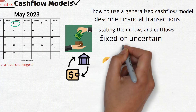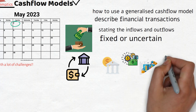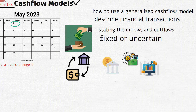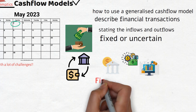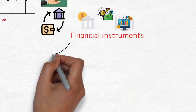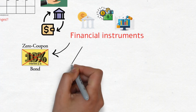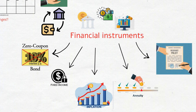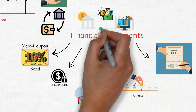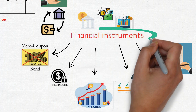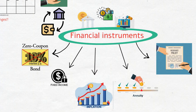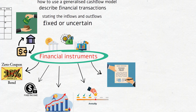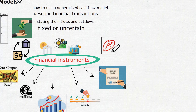For a given cash flow process, we will also be expected to describe the operation of various financial instruments such as zero coupon bonds, fixed interest securities, index linked securities, and annuities, as well as insurance policy contracts like endowments, term assurances, and car insurance. Understanding these financial instruments is crucial to passing the exam.